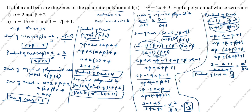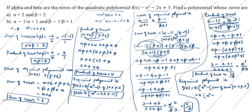Required polynomial: g(x) = k[x² - (sum of zeros)x + (product of zeros)] = k[x² - (2/3)x + 1/3]. Multiplying through by 3, g(x) = k[3x² - 2x + 1]. This is the answer for part B.